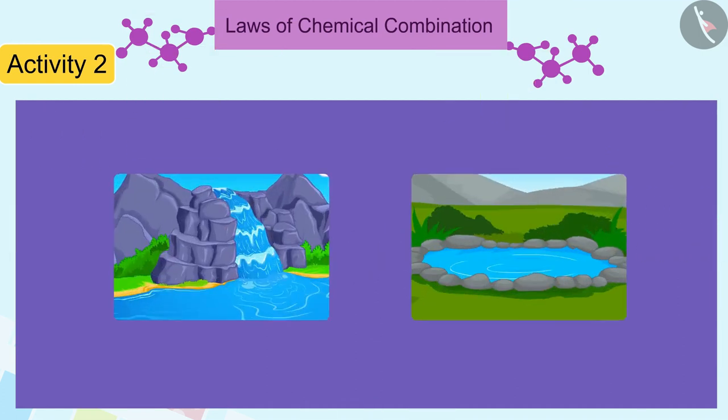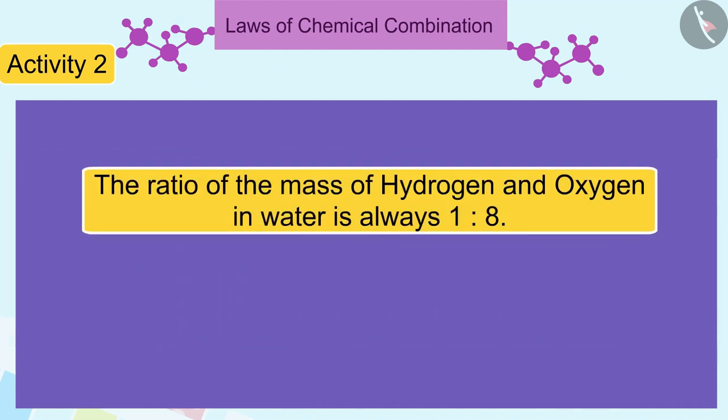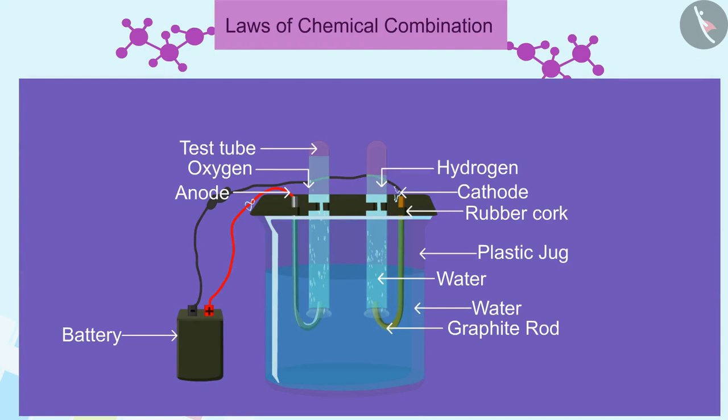Similarly, irrespective of the source of water, you will find that the ratio of the mass of hydrogen and oxygen in water is always 1 is to 8.